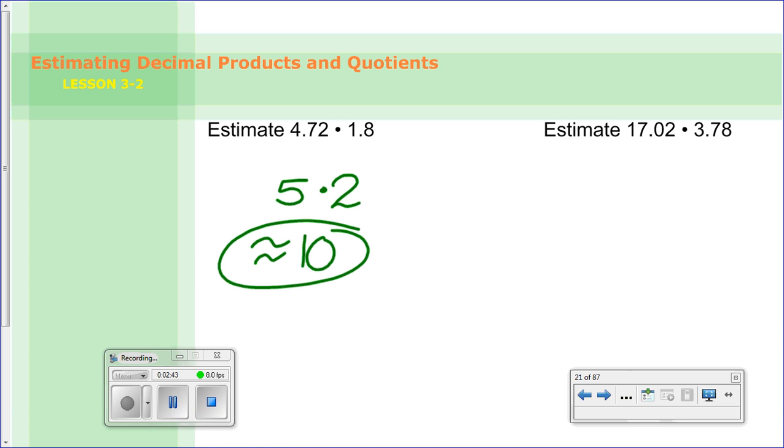For this one over here, we have 17.02. Well, that 2 hundredths is much closer to 17. Then we're timesing it by 3.78. Well, that would round up to 4. And if you multiply those out, we have 17 times 4. Well, 4 times 7 is 28, 4 times 1 is 4 plus 2 is 6. So our answer is about 68.